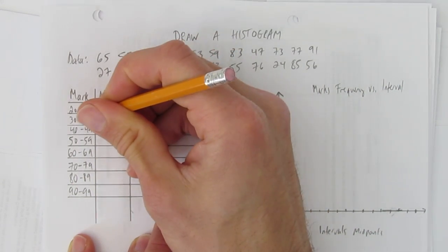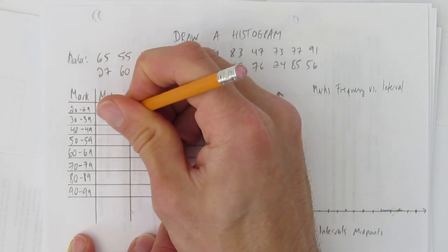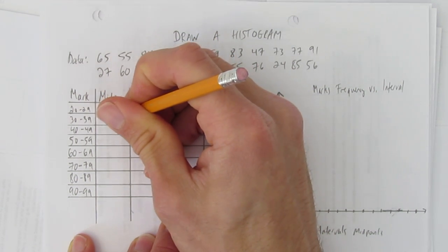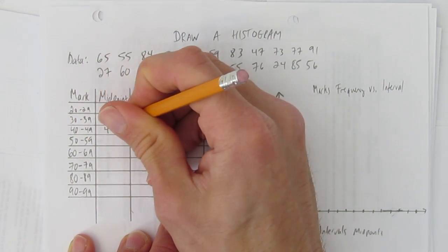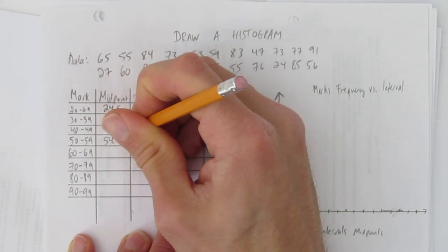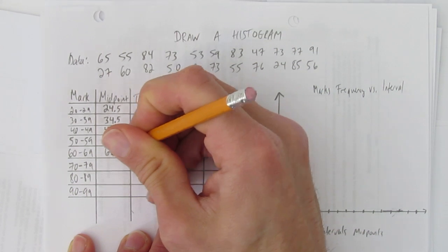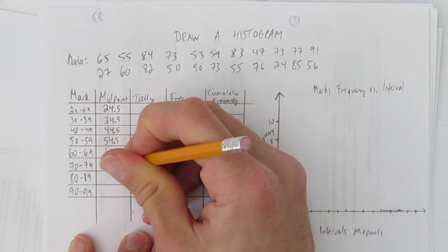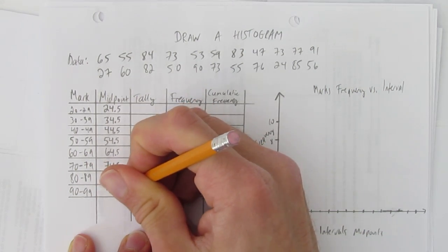What's the middle number of 30 and 39? It's like the average, which is 34.5. You might also notice a pattern. What happens when you add 40 and 49 and divide by two? You get 44.5. And just looking at the pattern, I'm able to determine the rest of the midpoints. That is, the middle numbers of each of the intervals. And the last one is 94.5.